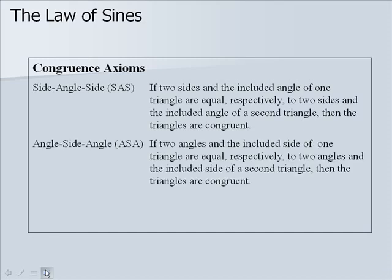Angle-side-angle states that if two angles and the included side of one triangle are equal, respectively, to two angles and the included side of a second triangle, then the triangles are congruent.